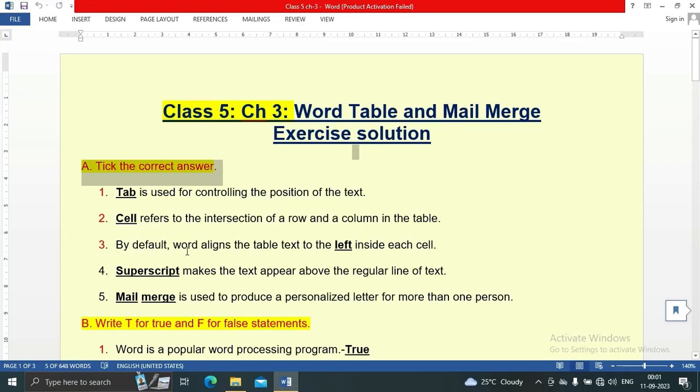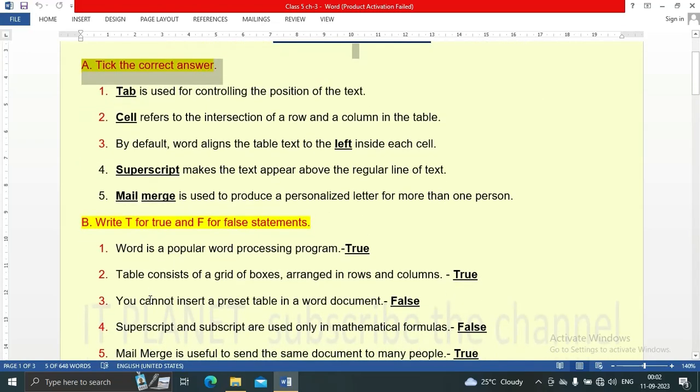By default, Word aligns the table text to the left inside each cell. Superscript makes the text appear above the regular line of the text. Mail merge is used to produce a personalized letter for more than one person.